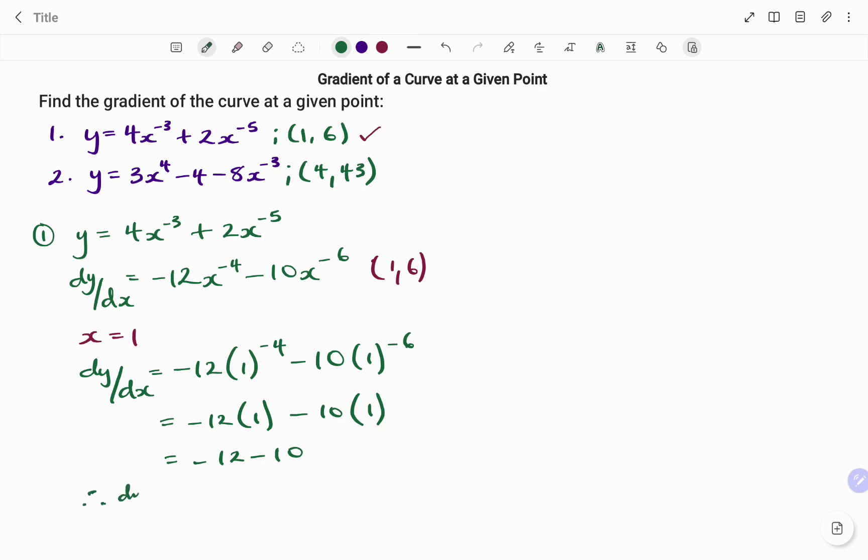Therefore, the gradient of the curve at point (1,6) will be negative 22.